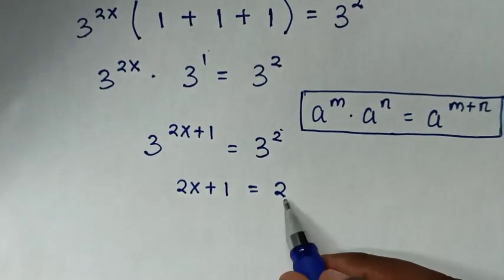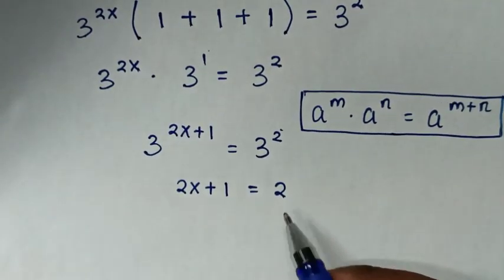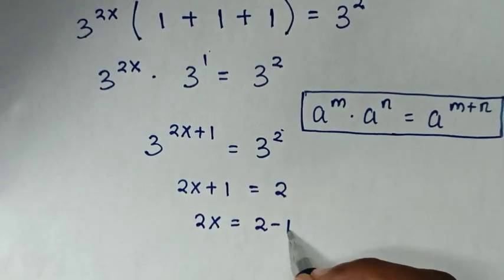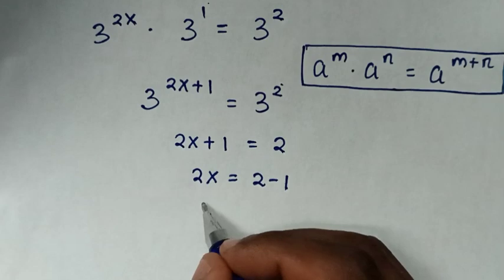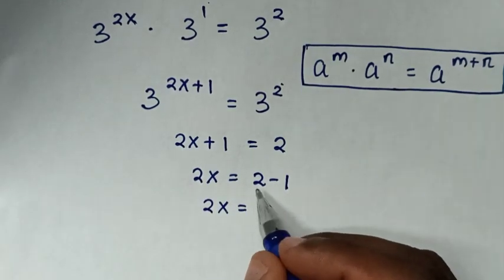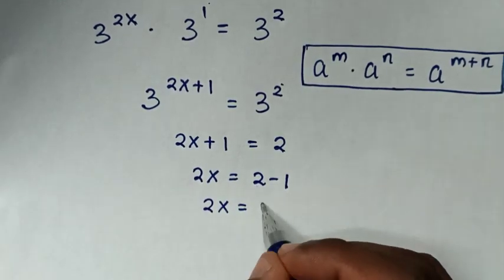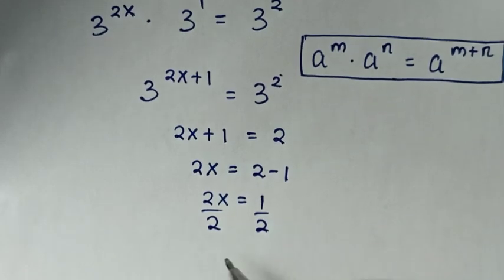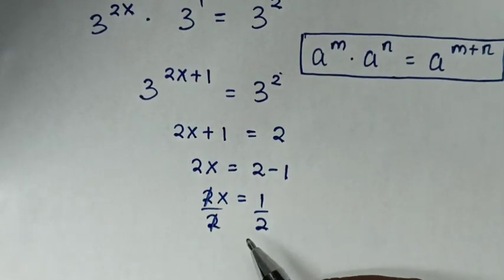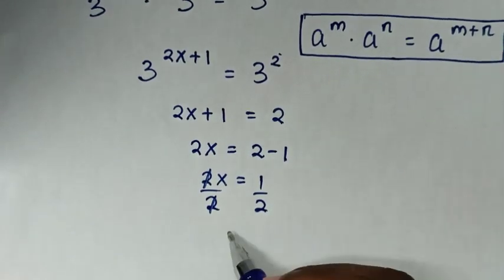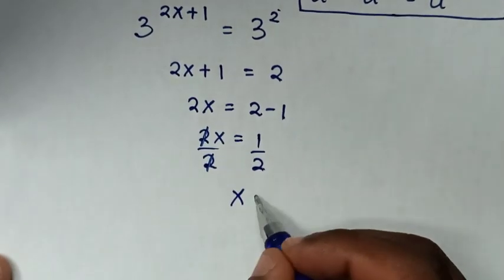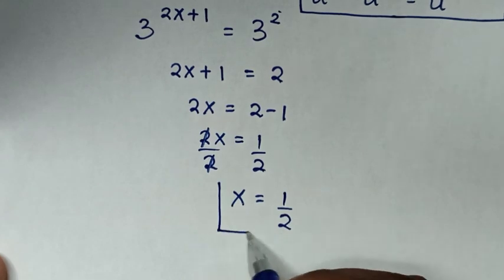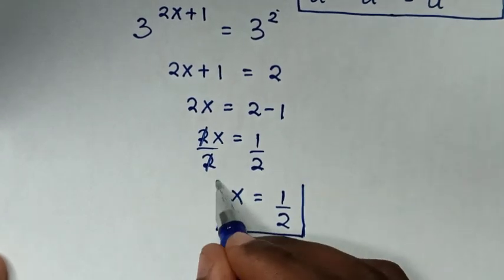Now we have the same base, so we compare the powers: 2x plus 1 equals 2. We take 1 to the right side, so 2x equals 2 minus 1, which is 1. Dividing both sides by 2, x equals one half. So this is our final answer.